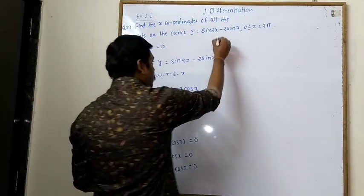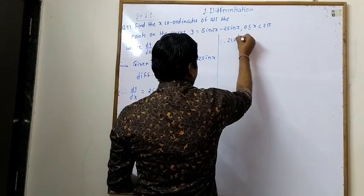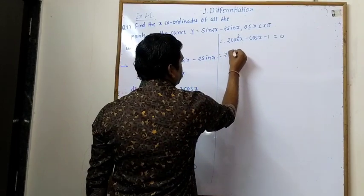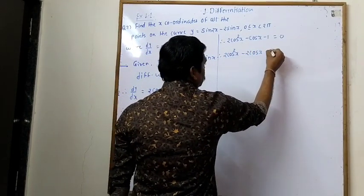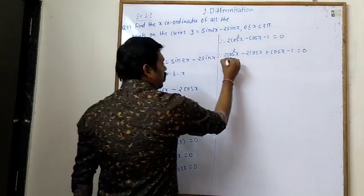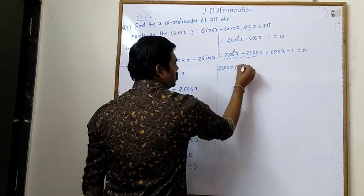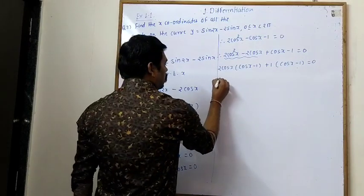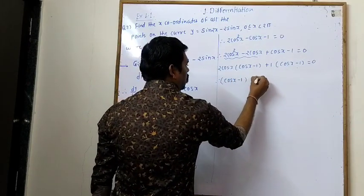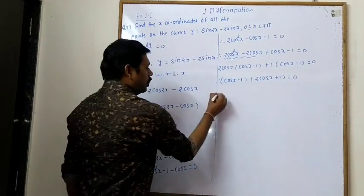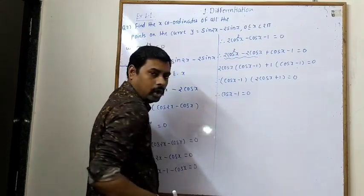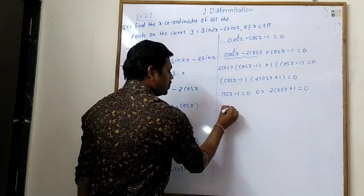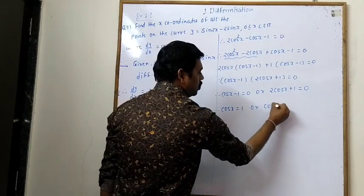Set dy/dx = 0: 2cos(2x) − 2cos(x) = 0, so cos(2x) − cos(x) = 0. Using the identity cos(2x) = 2cos²x − 1, we get 2cos²x − 1 − cos(x) = 0, which is 2cos²x − cos(x) − 1 = 0. This is a quadratic in cos(x). Therefore cos(x) = 1 or cos(x) = −1/2.